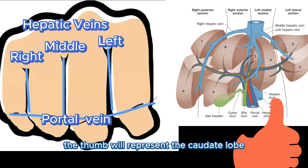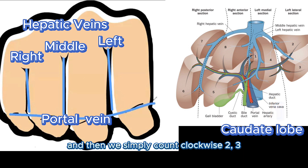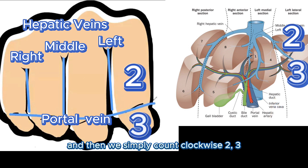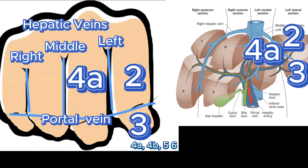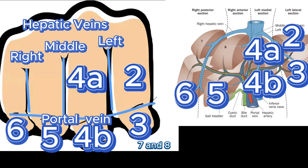The thumb will represent the caudate lobe, and then we simply count clockwise: 2, 3, 4a, 4b, 5, 6, 7, and 8.